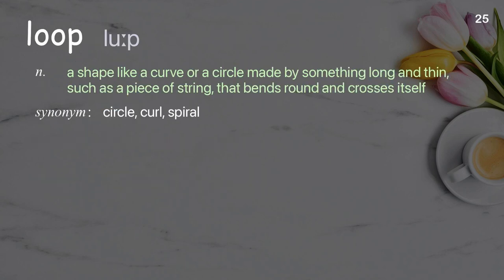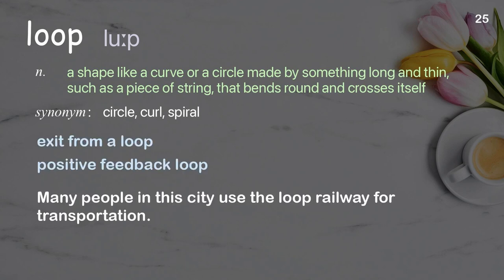Loop: a shape like a curve or circle made by something long and thin, such as a piece of string, that bends round and crosses itself. Examples: exit from a loop; positive feedback loop. Many people in this city use the loop railway for transportation.